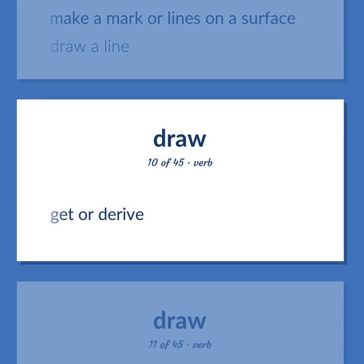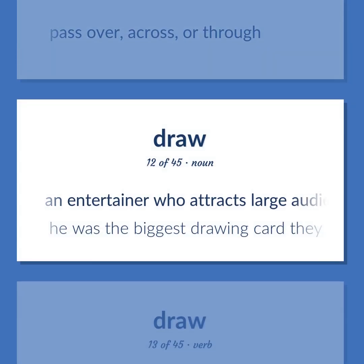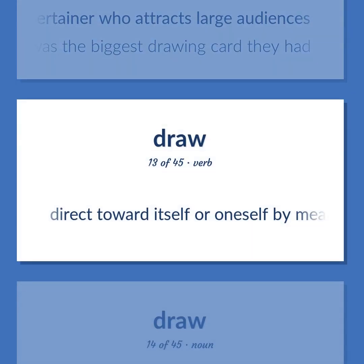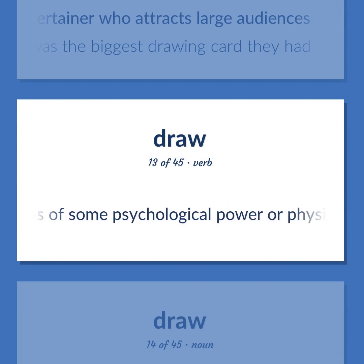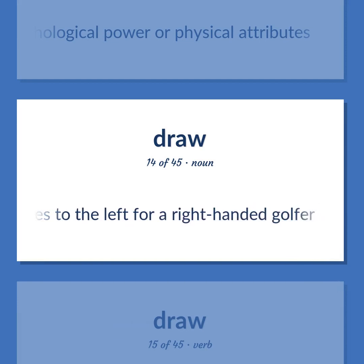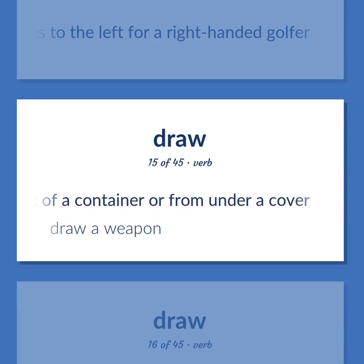Draw: an entertainer who attracts large audiences — 'He was the biggest drawing card they had.' Also, to direct toward itself or oneself by means of some psychological power or physical attributes. Also, a golf shot that curves to the left for a right-handed golfer. Also, to bring, take, or pull out of a container or from under a cover — 'Draw a weapon.' Also, to earn or achieve a base by being walked by the pitcher. Also, to make, formulate, or derive in the mind — 'I draw a line here.'